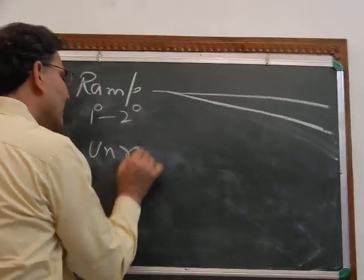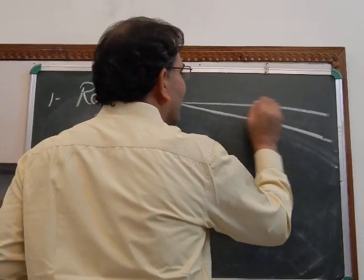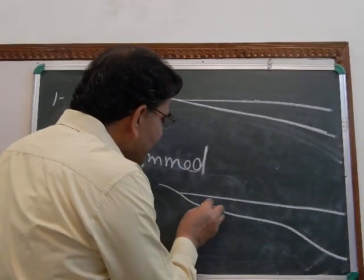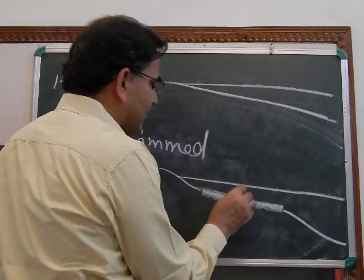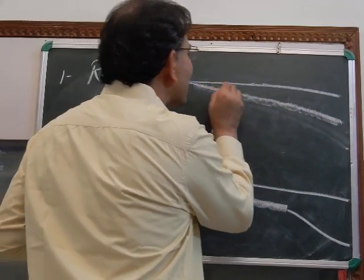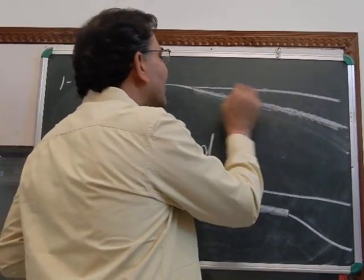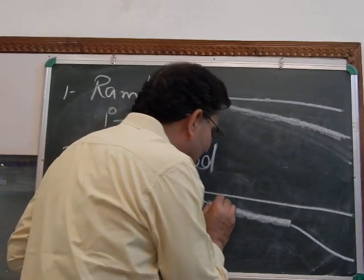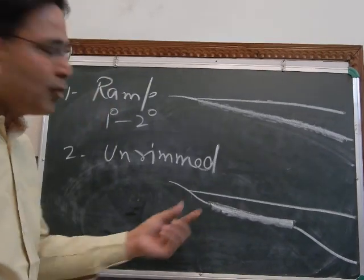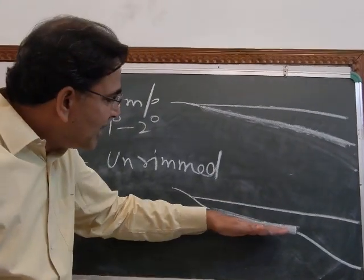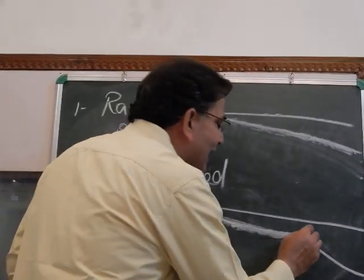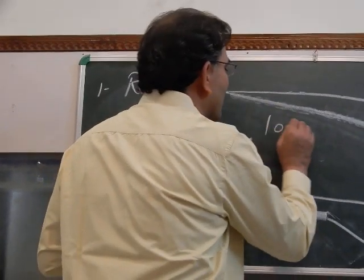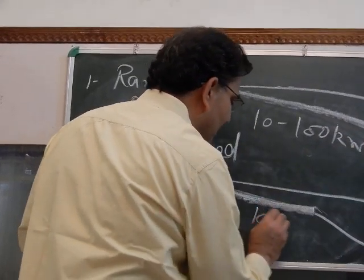The second type is the unrimmed platform. In the ramp platform, there is a continuous gentle inclination. In the case of the unrimmed platform, there is no inclination at all — they are roughly flat and roughly horizontal. All those places in the shallow sea which are very flat and have no rim on the ocean side are known as unrimmed platforms. The size is about 10 to 100 kilometers.